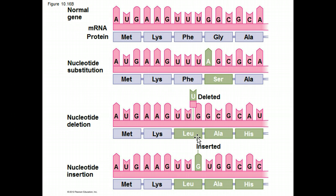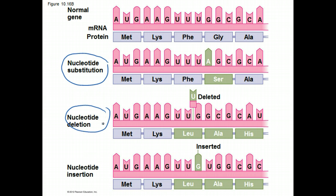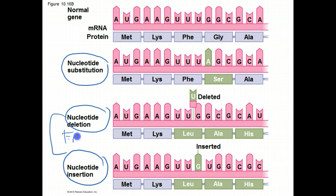The textbook has a great example showing what can happen when you make mutations. You can make substitutions — changing one of the nucleotides — you can make deletions by removing a nucleotide, or you can add an extra nucleotide. Deletions and insertions would cause what's called a frameshift.